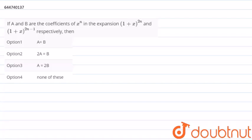Hello everyone, so the question for today is that if A and B are the coefficients of x raise to n in the expansion (1 + x) raise to 2n and (1 + x) raise to 2n minus 1 respectively, then we need to find the relation between A and B.